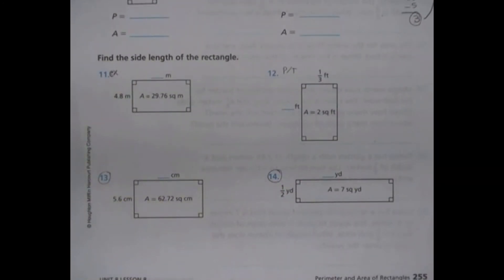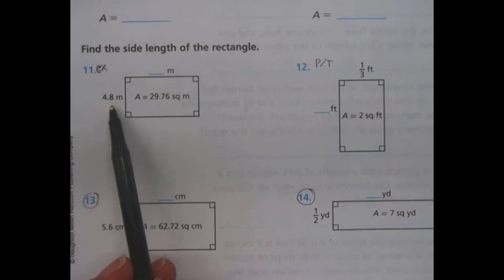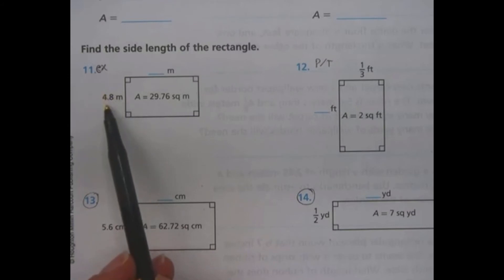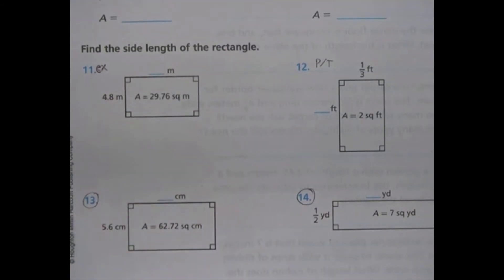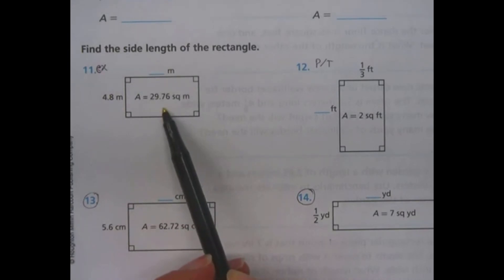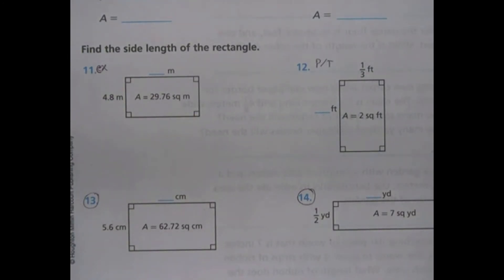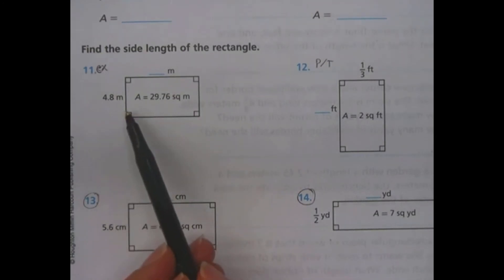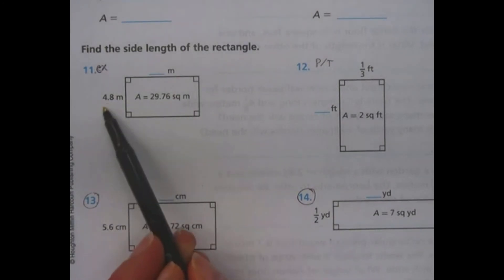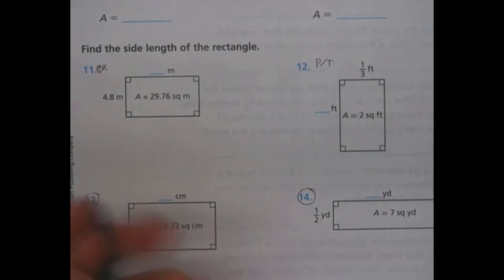Now, what you're going to notice is we're still dealing with area here, but this time we know what the area is and we know what one side length is — so we have to find the other side length. You're probably thinking: we had to multiply two sides to get the area. In fifth grade, we've talked a lot about how multiplication and division are inverse operations. So we're going to take the information we do have and divide to get the missing side.